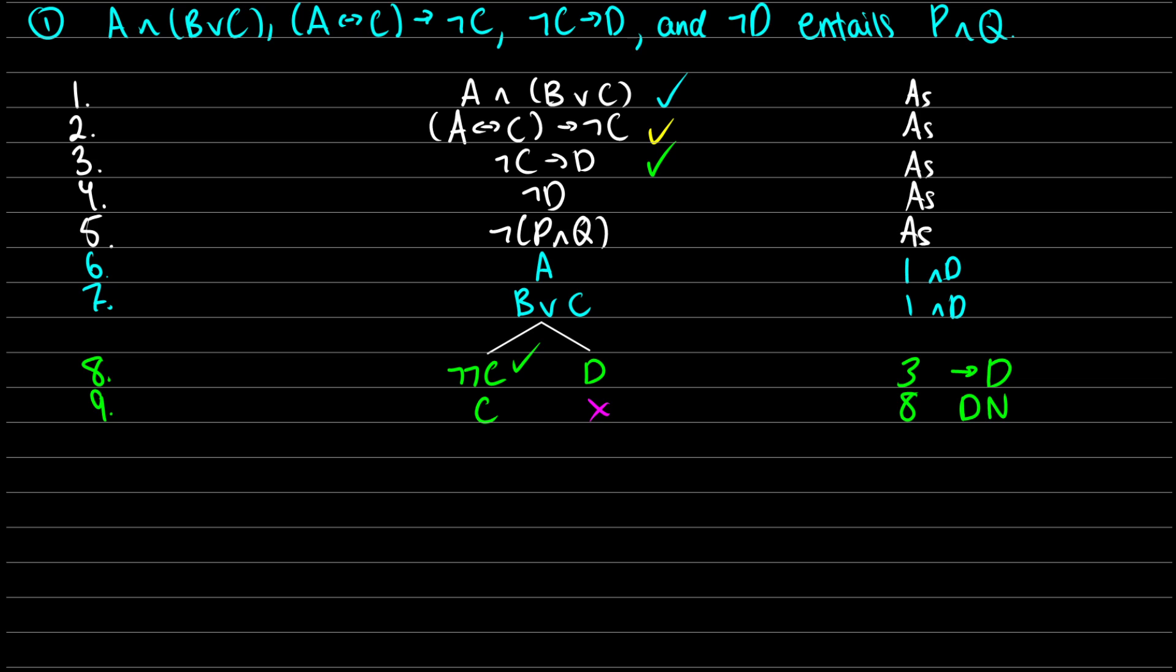Okay, I have C, so maybe we can do something to get rid of C. Well, I see the second line, A↔C→¬C. So this will be another → decomposition case, so we'll have to come up with two branching paths. Either A↔C, and we take the negation of that, either that's true, or the consequent ¬C is true. That's line 10, that comes from line 2, and this is → decomposition. Now, this right side ¬C is going to close, because we have C and we have ¬C.